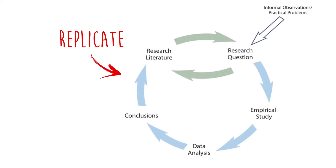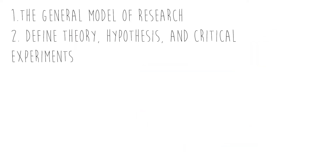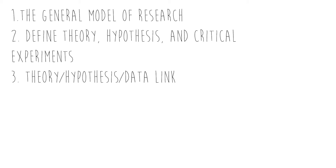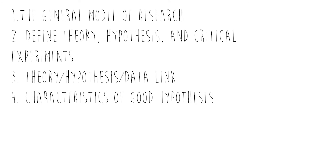So with that, let's review our learning objectives. First, the general model of research — basically, remember this graphic. Second, be able to define theory, hypothesis, and critical experiment. Third, the theory-hypothesis-data link: your theory needs to lead to your hypothesis, and your hypothesis needs to lead to your experiment — there needs to be a continuous, coherent story. Next, characteristics of good hypotheses — which is basically just that last learning objective: there is a link from theory to data. That's all.